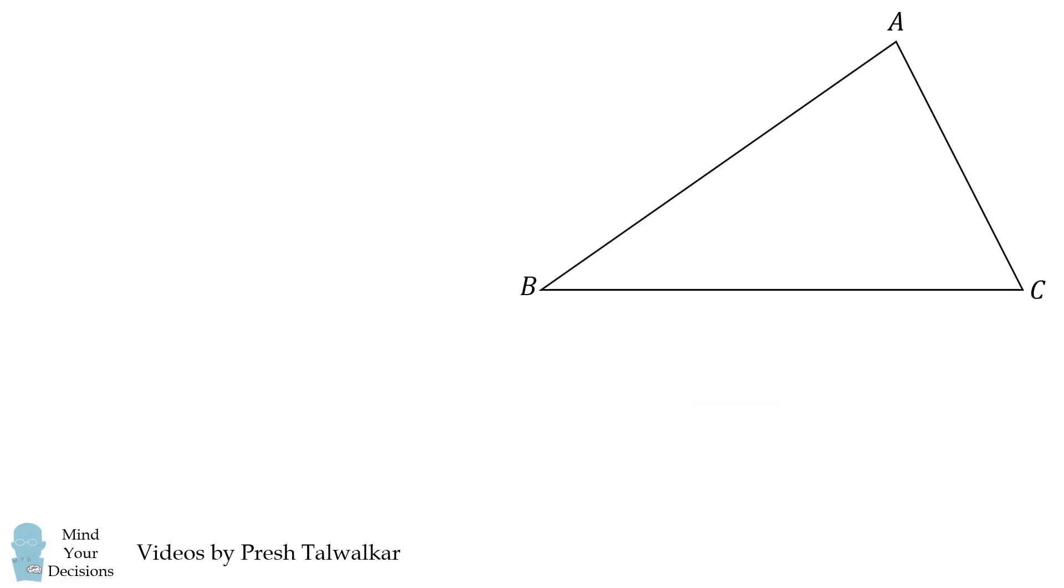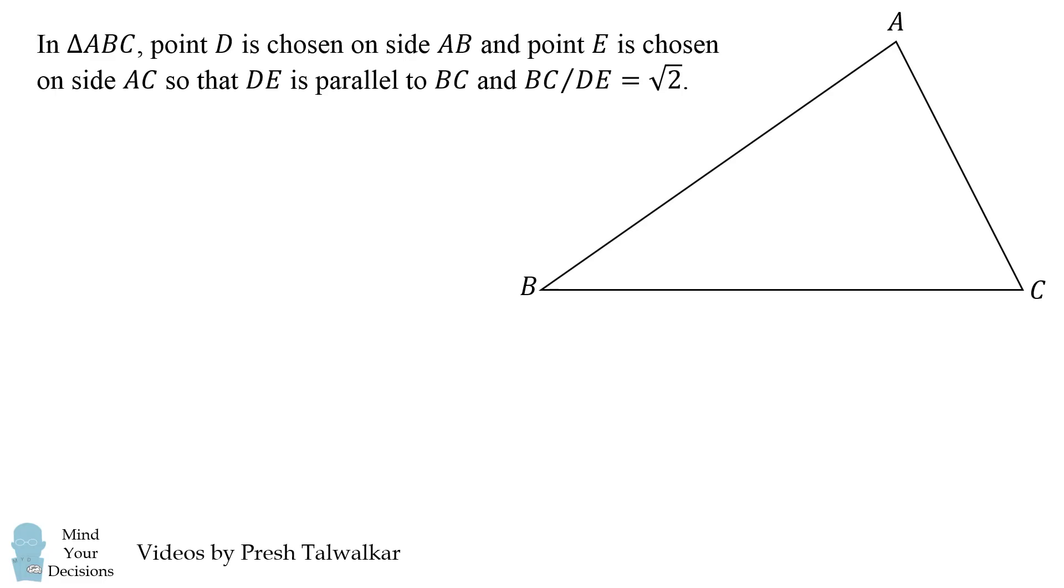So what was the problem? In triangle ABC, point D is chosen on side AB and point E is chosen on side AC so that DE is parallel to BC, and BC divided by DE is equal to the square root of 2.